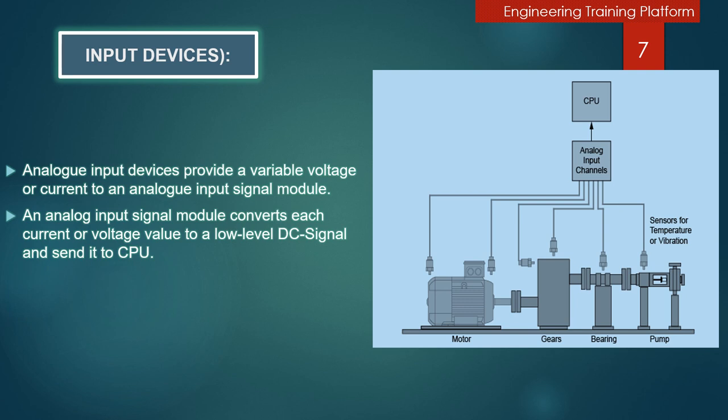This variable voltage and current represents a condition of machine or process such as temperature, pressure, vibration, rate of flow, weight, fluid level, etc. For each analog input device, the CPU receives the latest value from the devices and stores it.